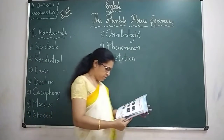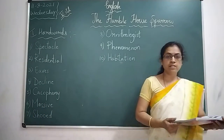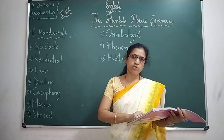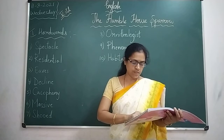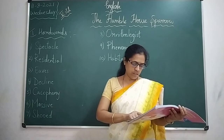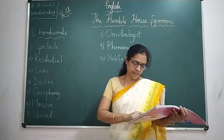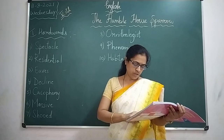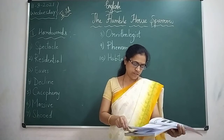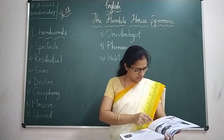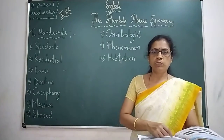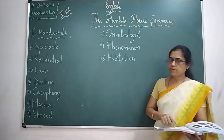So all these 10 words, write down in your classwork neatly. And for the meanings, I will tell just a few; you have to write them in your classwork. The remaining you can learn from the textbook itself. The meanings are: spectacular — a great spectacle; decline; maxim; eaves; shoo; phenomenon; and habitation. Write this down in your classwork after the hard words.